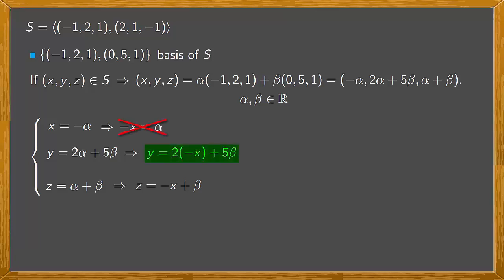In the second equation we solve for a new parameter, in this case β. We have y = -2x + 5β, so y + 2x = 5β, and therefore (y + 2x)/5 = β. Substituting this in the last equation, we have z = -x + β, which is (y + 2x)/5.